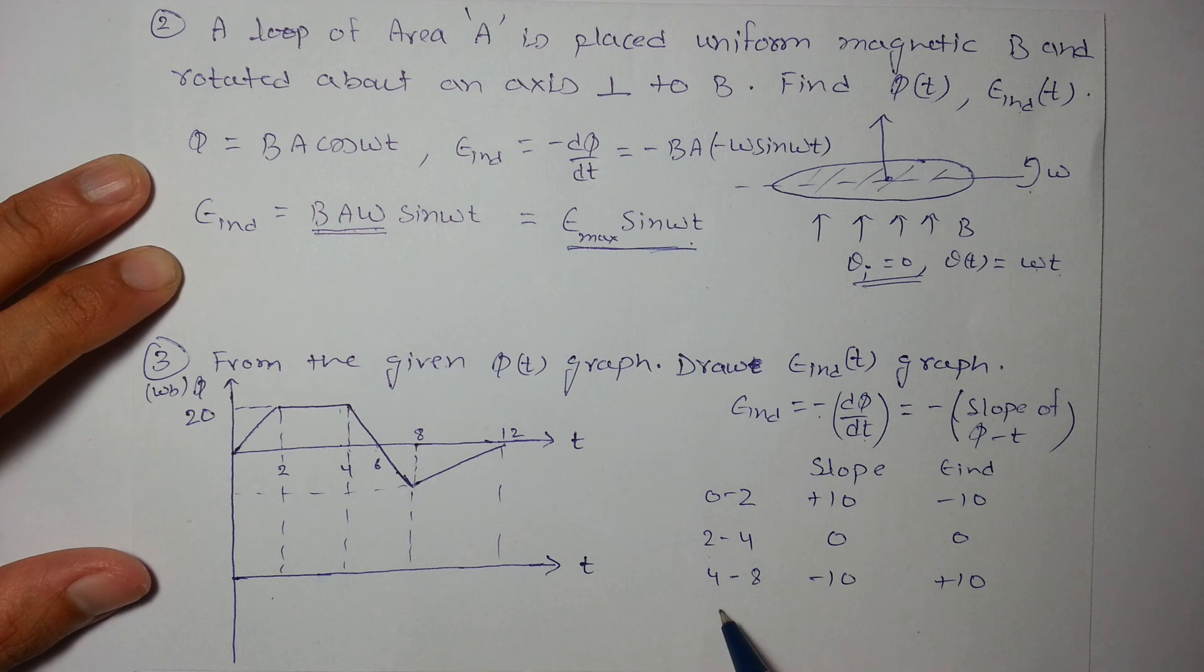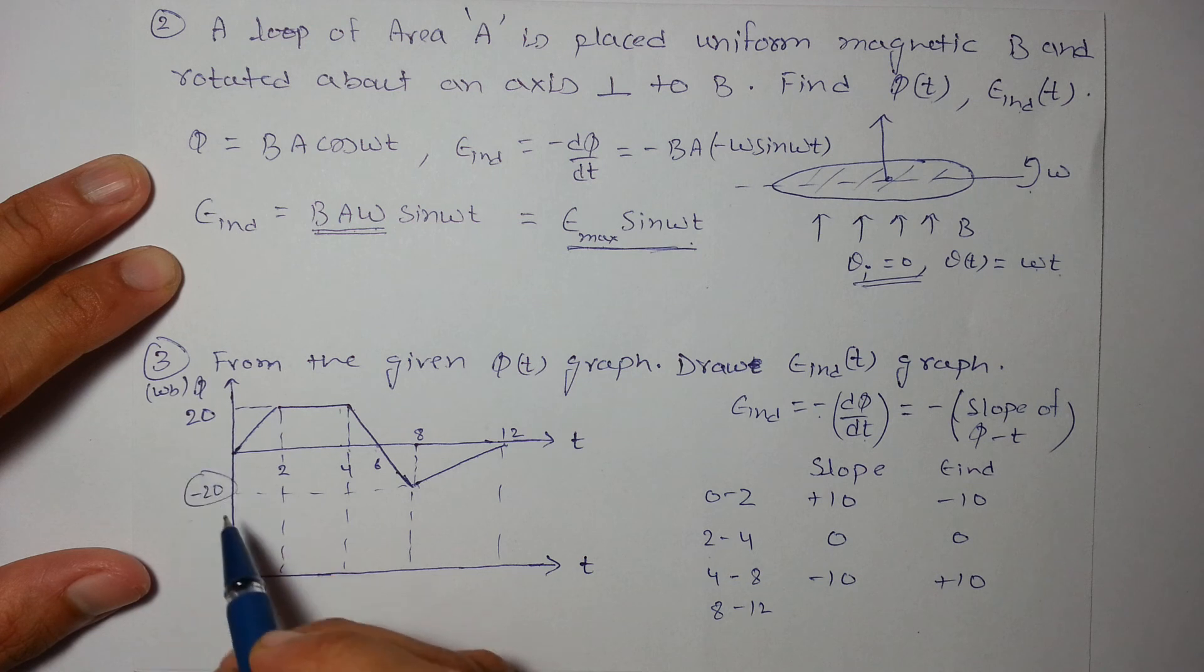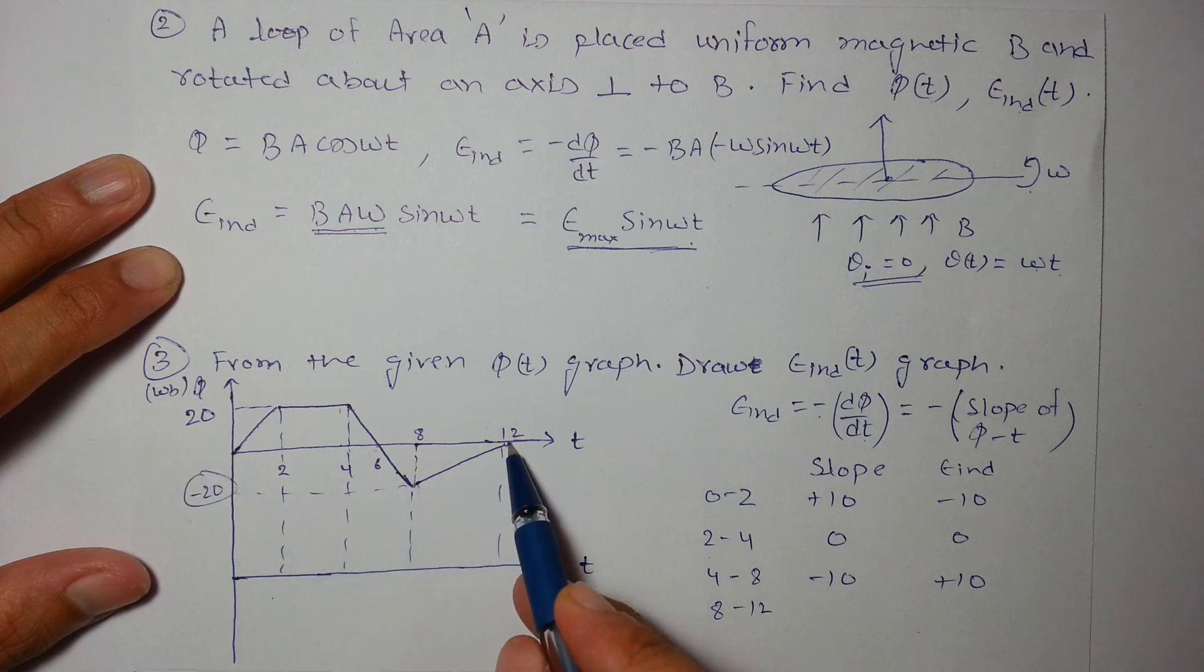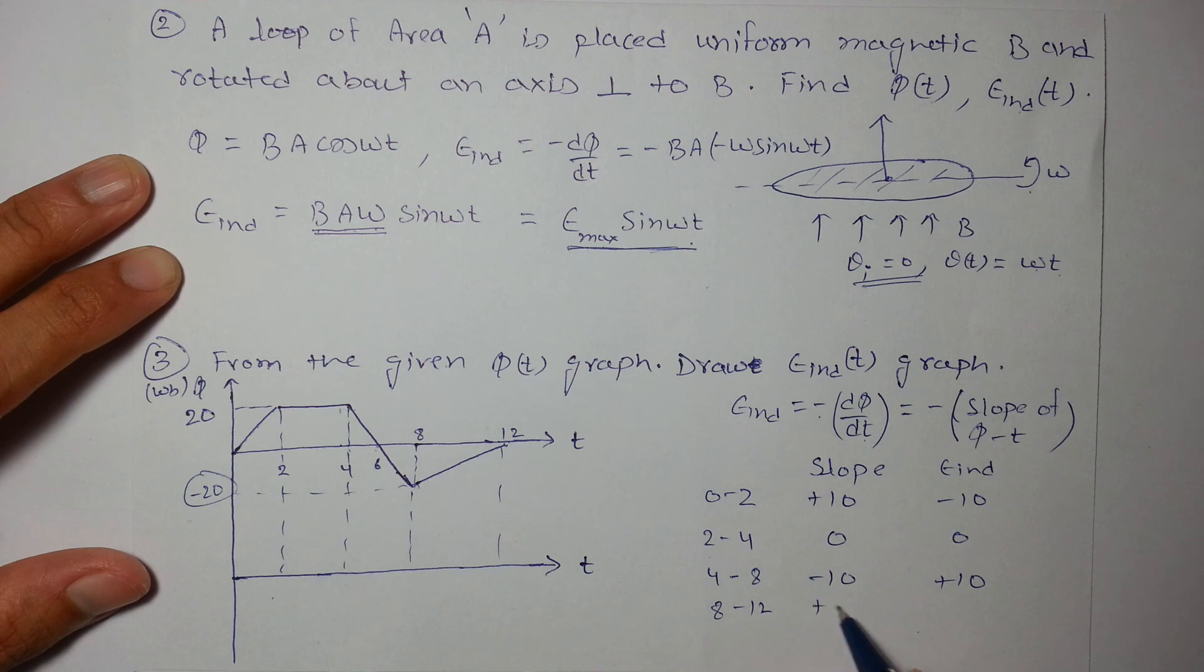Then from 8 to 12, it rises by 20, as the value is -20. It rises by 20 units in 4 seconds. So the slope is +5 and EMF induced will be -5.